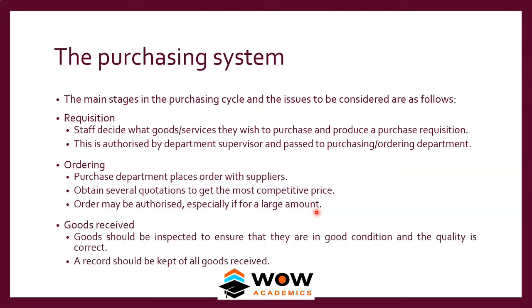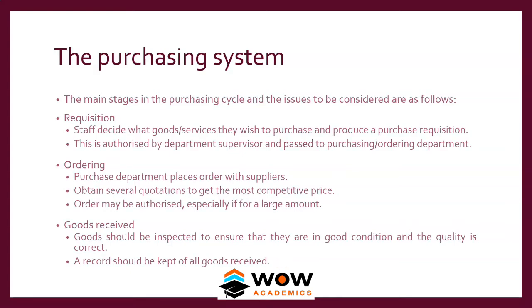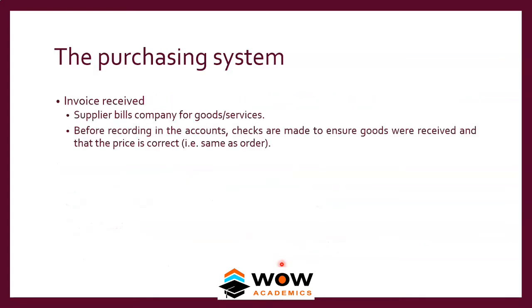Once the order is placed, goods are received by the warehouse department. Goods should be inspected to ensure they are in good condition and the quality is correct. A record should be kept of all goods received, so the warehouse knows how many units have been received and how many have been dispatched to the production department — a check and balance mechanism.